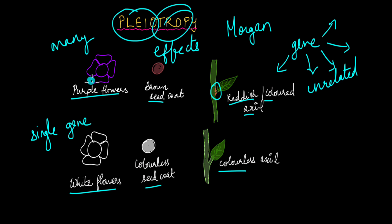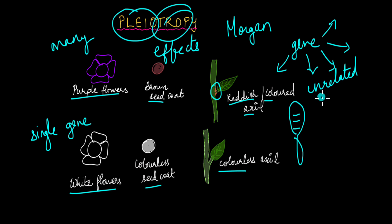You may be thinking: how do we know that this is a single gene and not two or three genes located very close to each other on the chromosome such that they are almost always inherited together? With what we know about linkage and recombination, how can we be sure that this is an effect of pleiotropy and not linked genes?